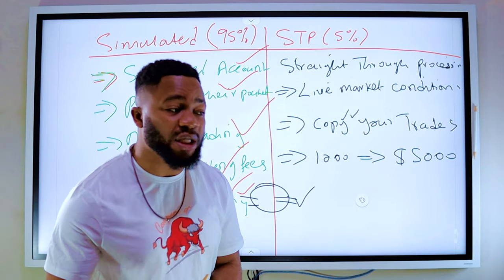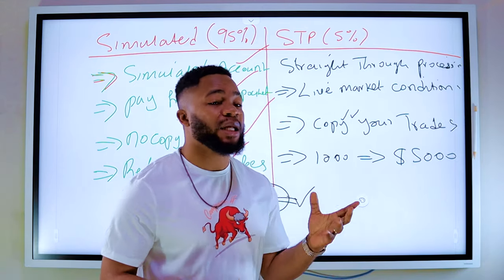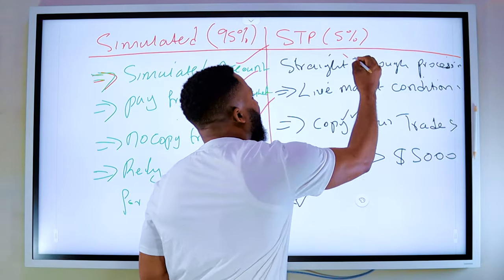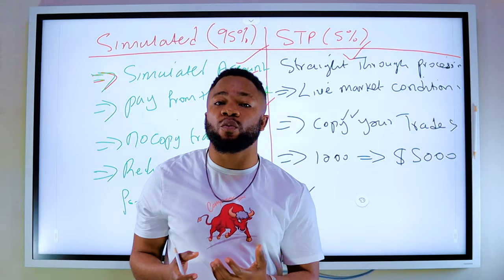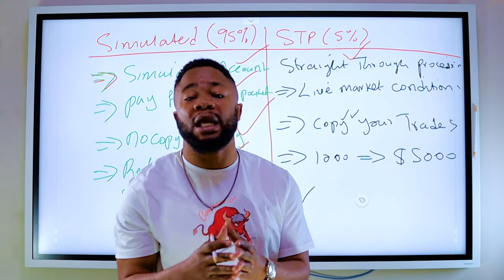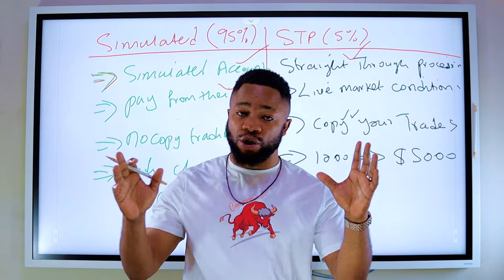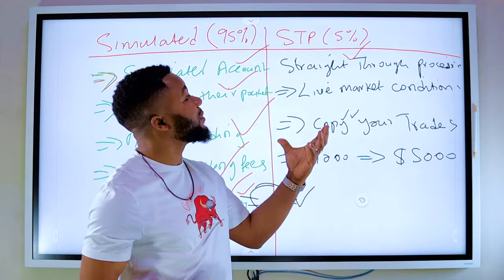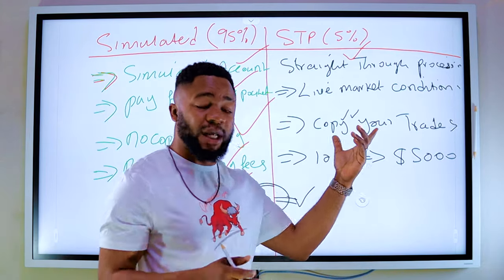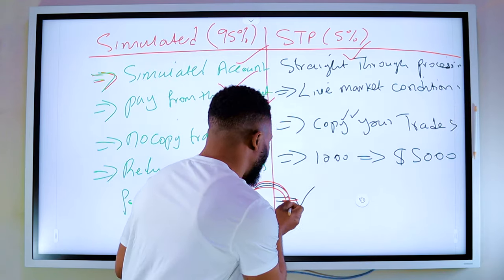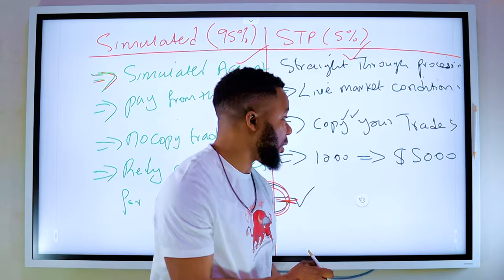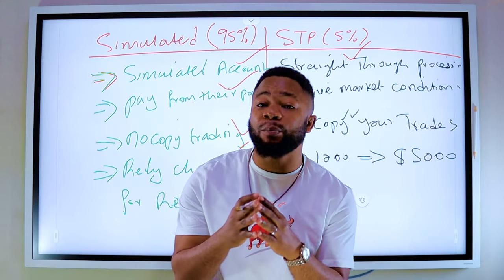That is the simulated model — they rely strictly on challenge fees to recycle traders, and if they choose to pay profitable traders they pay them from those fees. Now let's go to the STP model. STP stands for straight through processing — similar to an ECN model of trading in the sense that when you place your trade with an STP firm, they actually send your trade to live market conditions. Remember, about 95% of pro firms are simulated and only about 5% are STP, which is the good model. Some pro firms have both models.